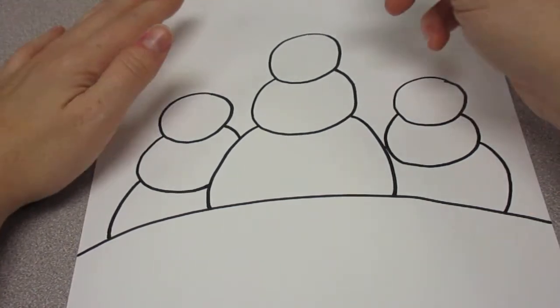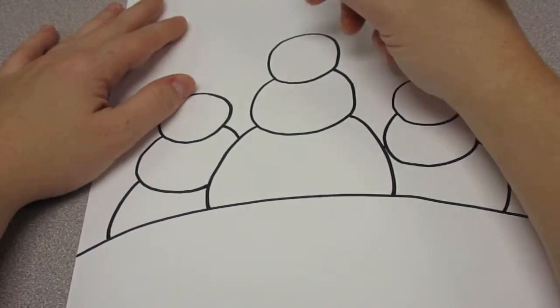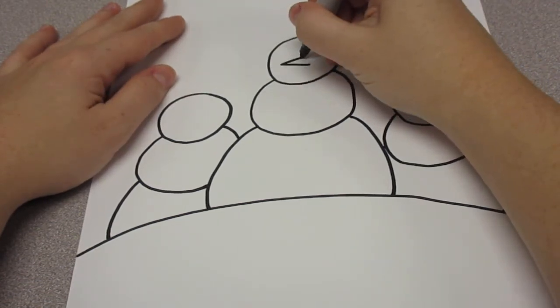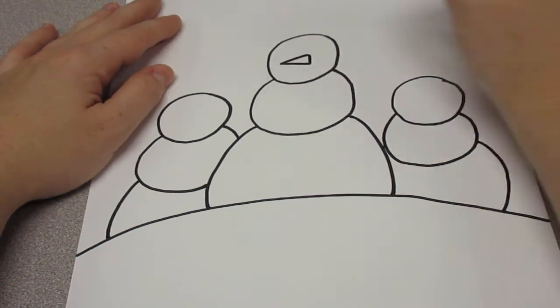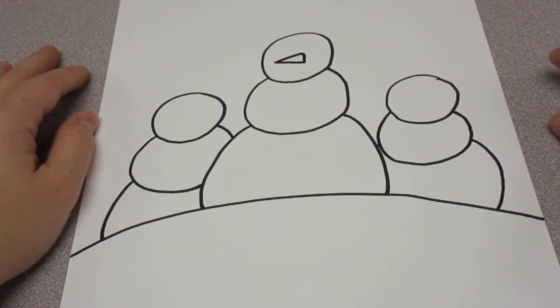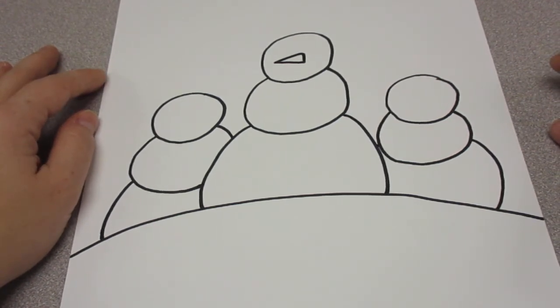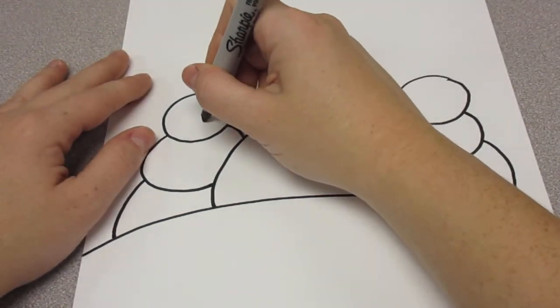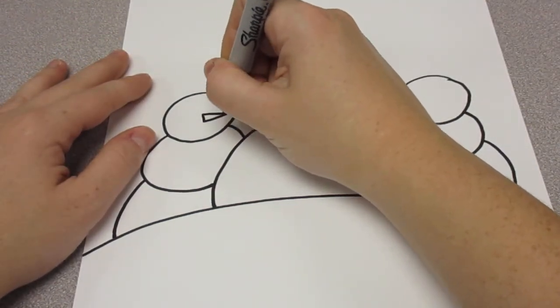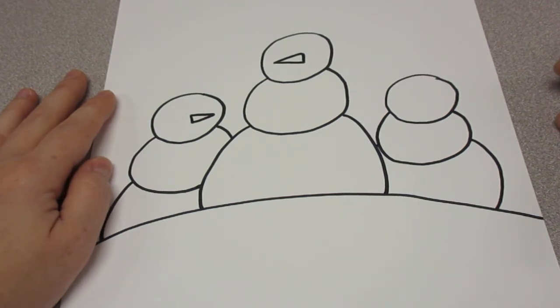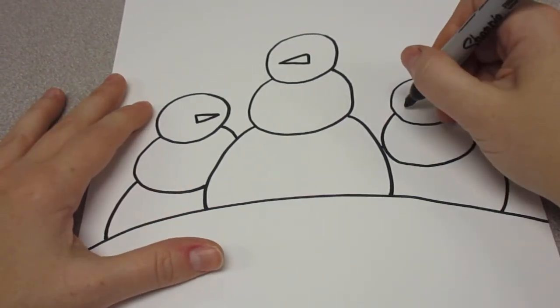Okay, each snowman needs to have a triangle for a carrot nose, so we're going to make a triangle. I'm going to put this one the other way. Maybe he's looking this way. And one more.